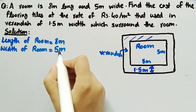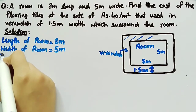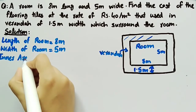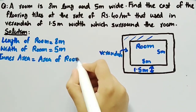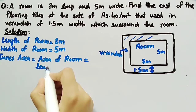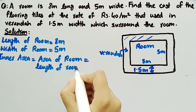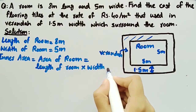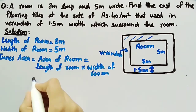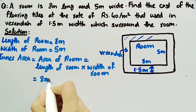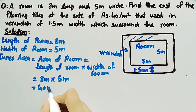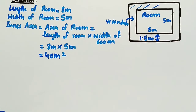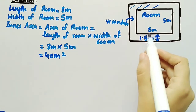Since we have the length and width of the room, we can find the area of the room, which can be called the inner area. Inner area, which is also the area of the room, is equal to length of room multiplied by width of room. Substituting the values: 8 meter multiplied by 5 meter gives us 40 meter square. So inner area or area of room is 40 meter square.